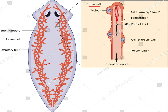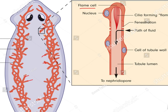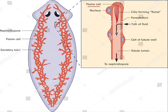Flame cells are the main cells concerned with excretion of water from the body of planaria. These cells have a nucleus and cytoplasm, but the nucleus and cytoplasm do not have much connection with excretion. The part of the flame cells that is involved in excretion is the cilia — these cilia help in the excretion process.